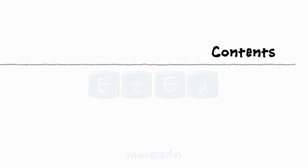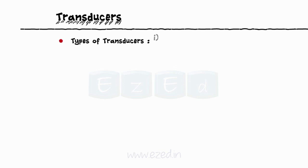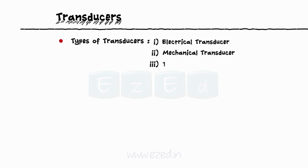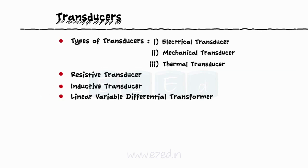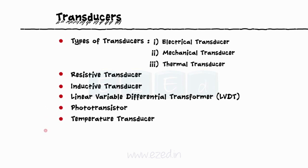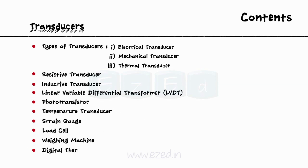Transducers. In this EasyEd video lecture, we will learn about transducers — their introduction, types of transducers such as electrical, mechanical and thermal transducer, resistive transducer, inductive transducer, linear variable differential transformer or LVDT, phototransistor, temperature transducer, strain gauge, load cell, weighing machine, and lastly the digital thermometer.